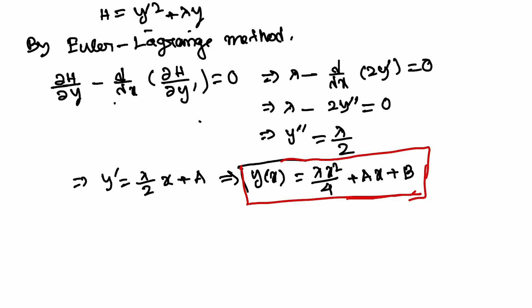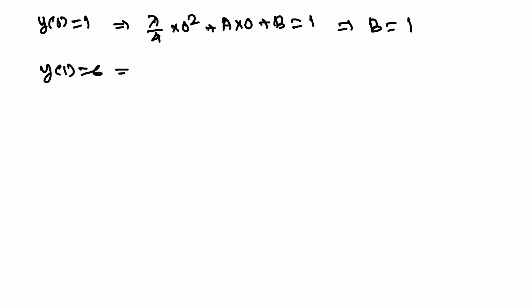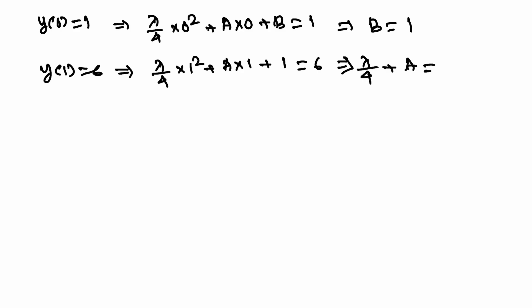Now we find the values of lambda, a, and b using the boundary conditions. From y(0) = 1, we get b = 1. From y(1) = 6, substituting into y(x) = lambda x-squared over 4 plus a x plus b gives lambda over 4 plus a plus 1 = 6, so lambda over 4 plus a = 5. Call this equation 1.